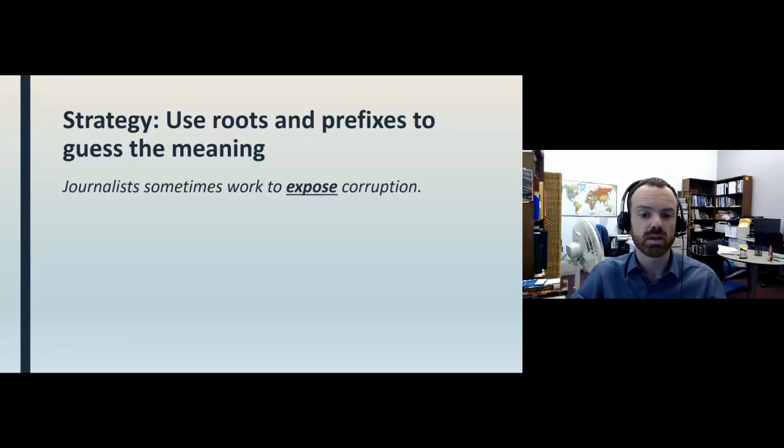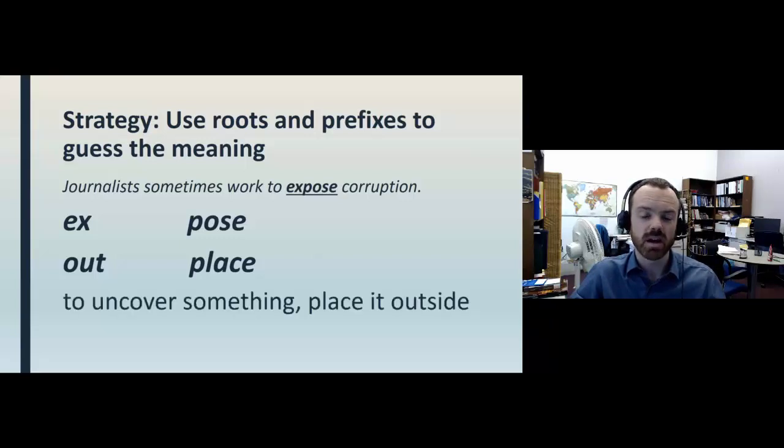Let's make a guess. You can break it into two parts: out and place. If journalists expose corruption, they place it outside in a way, where people can see it. So you can make the guess that expose means to uncover something and place it where people can see it, out in the open.